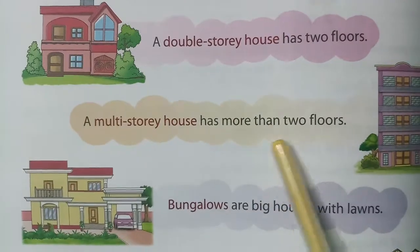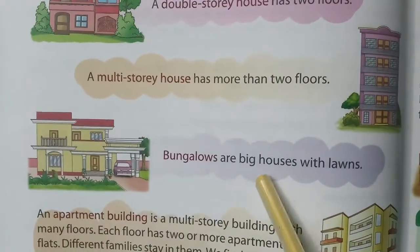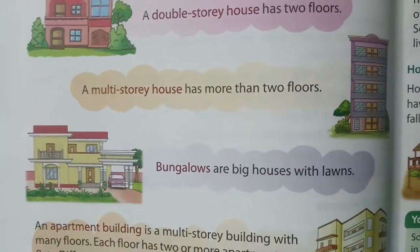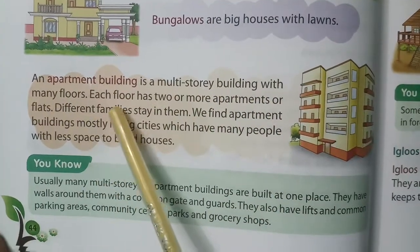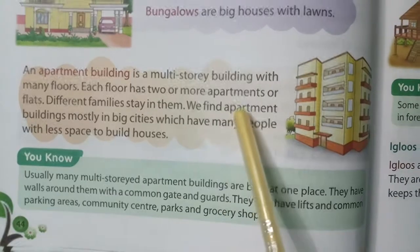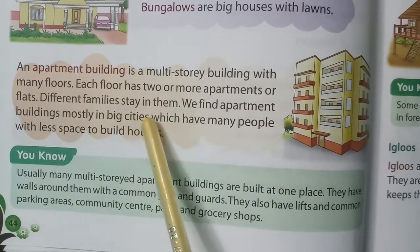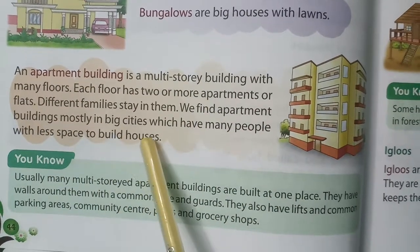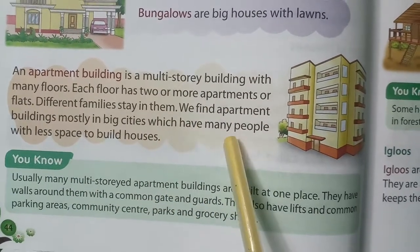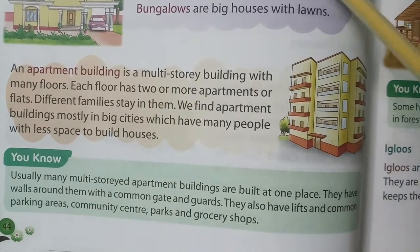A multi-storey house has more than two floors. Bungalows are houses with lawns. Apartment buildings are multi-storey buildings with many floors. Each floor has two or more apartments or flats and different families stay in them. We find apartment buildings mostly in big cities which have many people but less space to build houses.